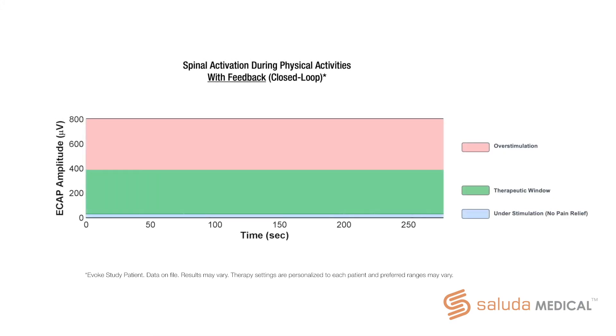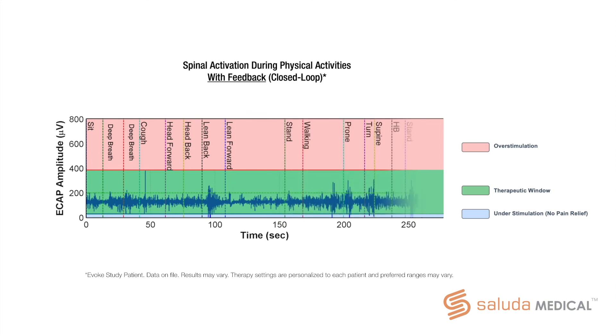Conversely, with the closed loop spinal cord stimulation, while there is naturally some variation, the stimulus output is adjusted with every pulse, resulting in the patient spending significantly more time in the therapeutic window, around the desired level.